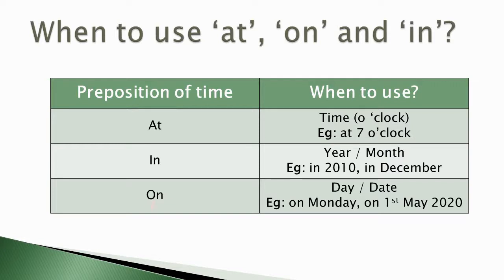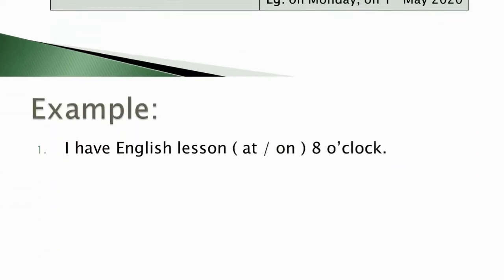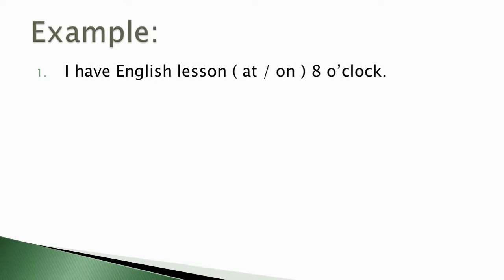We use on when we discuss about day or date. For example, Monday or 1st May 2020 or any date. Full date. Let's do some examples.